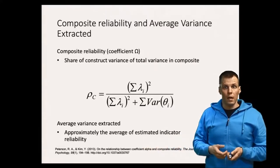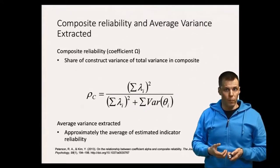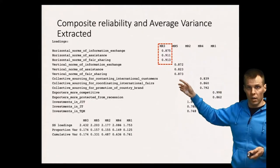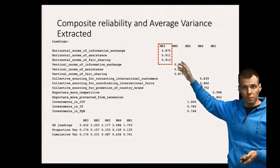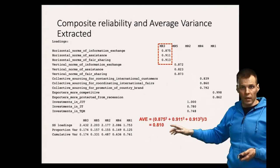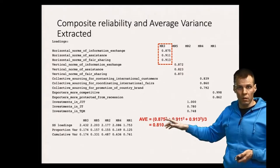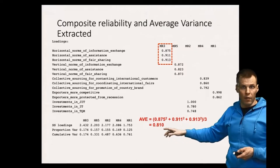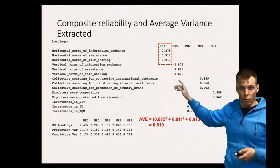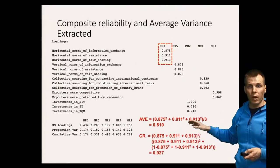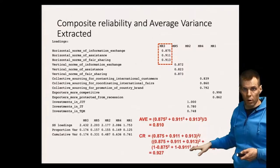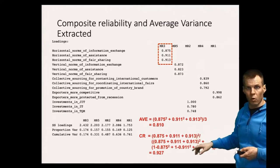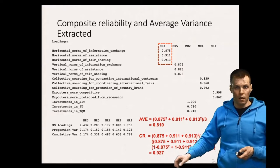Let's do an example and check what kind of reliability indices we get from our exploratory factor analysis results. For the first indicator of the first factor, we can use the equation from the previous slide. The reliability is the square of the factor loading, which estimates reliability of an indicator. We divide by three because we have three indicators, so the average variance extracted for this factor would be 81 percent. Composite reliability, which is more useful, is calculated by determining how much variance the factor explains.